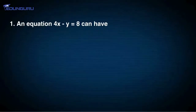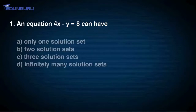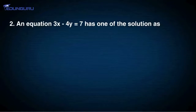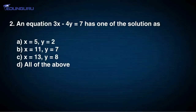Before going to the next section, let's solve some multiple choice questions. Question 1: The equation 4x minus y equals 8 can have — option A: only one solution set, option B: two solution sets, option C: three solution sets, option D: infinitely many solution sets. Question 2: The equation 3x minus 4y equals 7 has one of the solutions as — option A: x=5, y=2; option B: x=11, y=7; option C: x=13, y=8; option D: all of the above.